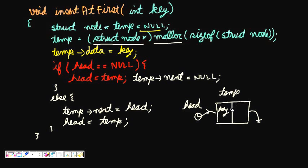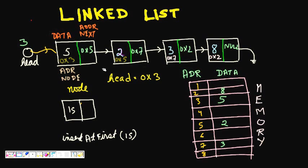For example, if the operating system allocates memory location 0x4 for our new node and we call `insertAtFirst(15)`, then 15 is stored there and temp->next is set to null. This handles the case where the linked list was empty. But if the linked list is not empty and already has one or more elements, we handle it differently.